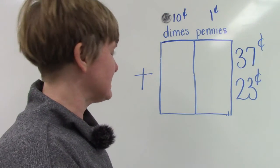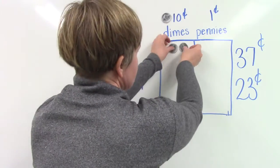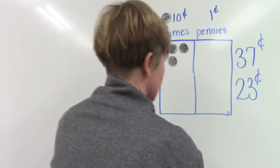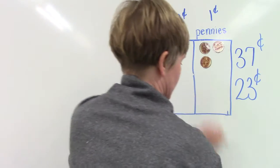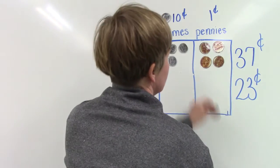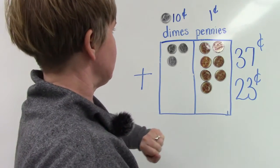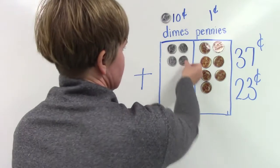Let's try this again. This time we're going to add 37 plus 23. For 37 we'll put down three dimes: 10, 20, 30, 31, 32, 33, 34, 35, 36, and 37.